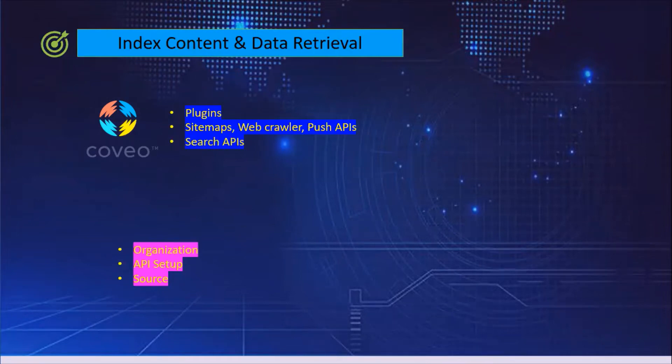In case we need to have custom indexing, we can go for sitemap-based indexing, web crawler, or push APIs. This gives more controlled indexing within Covio.